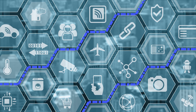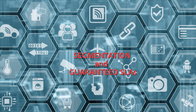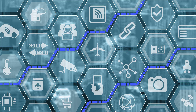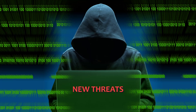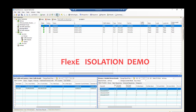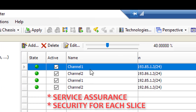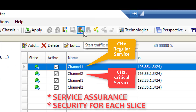Network slicing is, in fact, a double-edged sword, enabling virtual segmentation of the network and guaranteeing service assurance on one hand, while presenting various security threats such as data leakage between slices on the other. This first demo shows ECI's solution to create isolation between slices, enabling service assurance while ensuring the security of each slice.